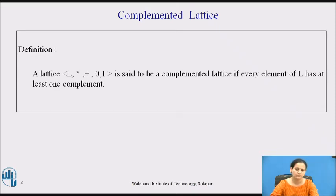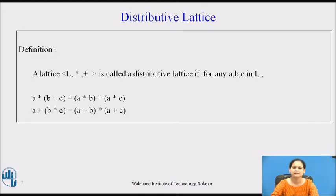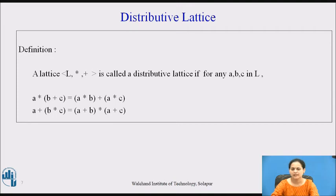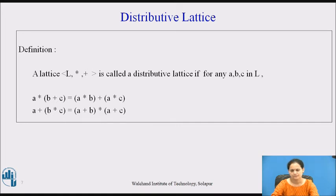On the same line we can go for one more category of lattice. When we defined a lattice as an algebraic system, we said that it contains the properties of commutativity and associativity, but we have not talked about the third important property — that is the distributive property. Now if you are able to satisfy the property of distributivity for the given lattice, then we get a different type of lattice, because along with being commutative and associative it now holds the property of distributivity as well.